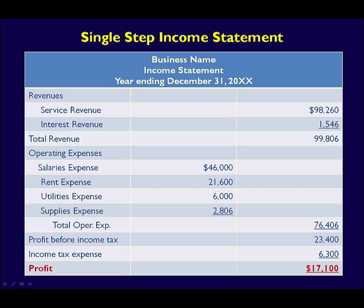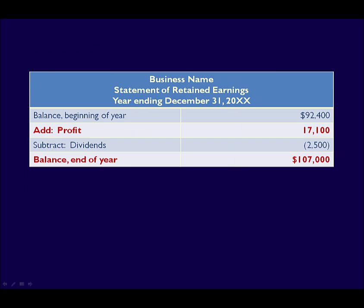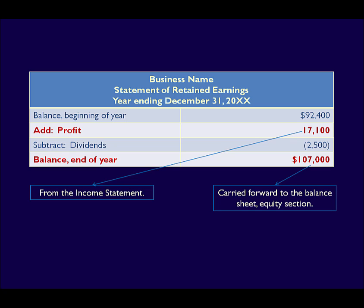The income statement shows the profitability of a business. It shows the revenues and expenses over a period of time. The profit at the bottom of this statement — or loss if expenses are greater than revenues — is used in the statement of retained earnings. The statement of retained earnings shows how much of the profit is kept in the business for future growth and expansion. It adds the profit, or deducts the losses, taken from the income statement to the opening retained earnings from the prior year. After subtracting dividends, the resulting number is transferred to the equity section of the balance sheet.